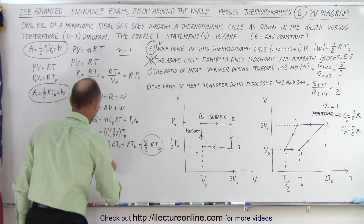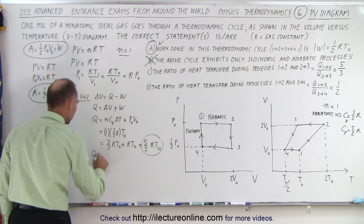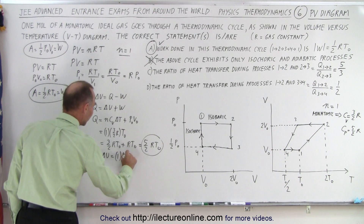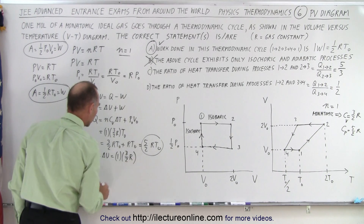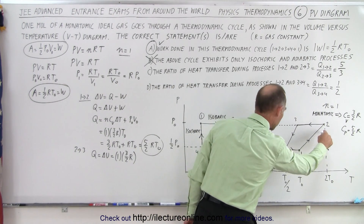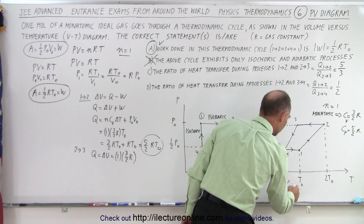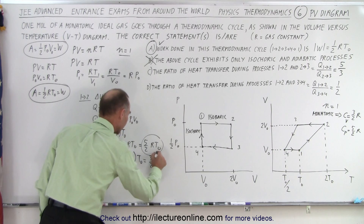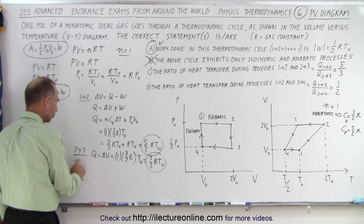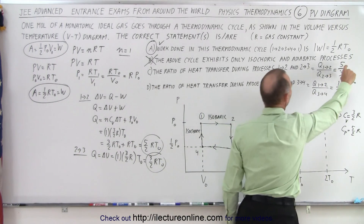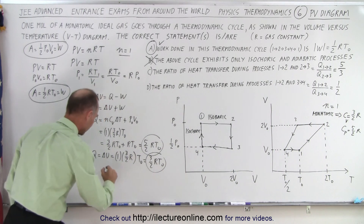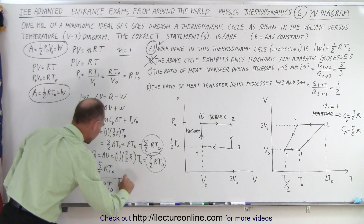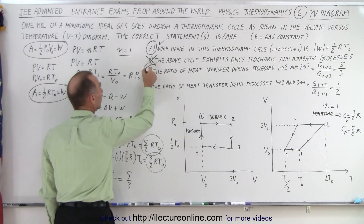Going from two to three is isochoric — no work is done. So Q = ΔU = nCᵥΔT = 1 × (3/2 R) × (−T₀) = −3/2 RT₀. Taking the ratio of |Q₁₂| to |Q₂₃|: (5/2 RT₀) divided by (3/2 RT₀) = 5/3. The ratio is indeed five to three, so statement C is correct.